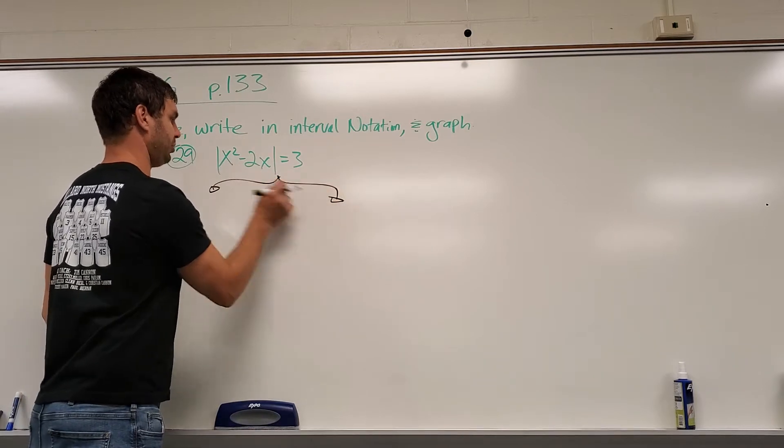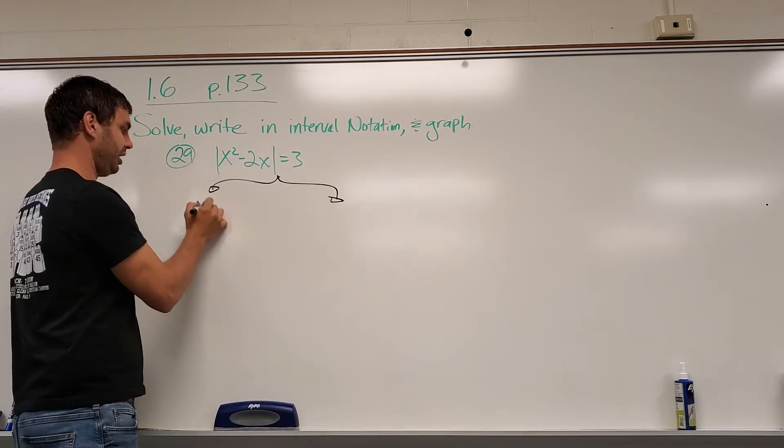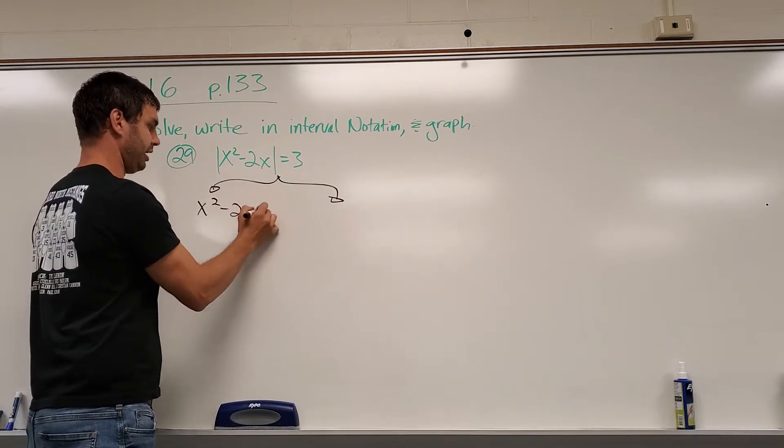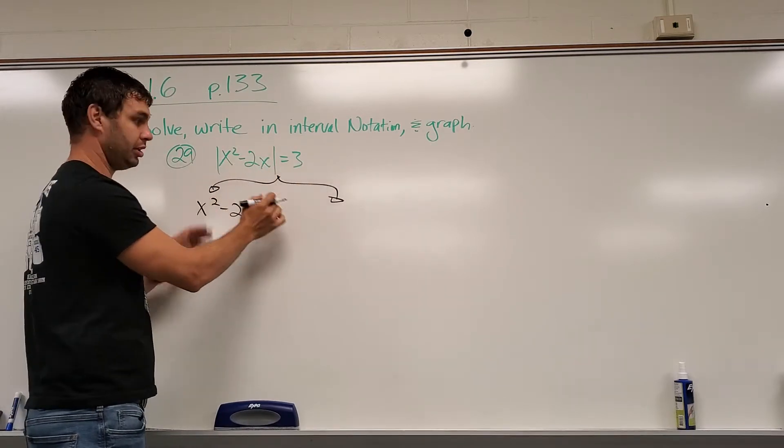So, our absolute value signs are isolated already. We can make our two cases: x squared minus 2x equals 3, just like it looks, but drops the absolute value bars.